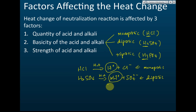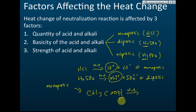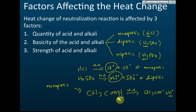If an acid forms two hydrogen ions it is diprotic, and one hydrogen ion means monoprotic. Now, consider CH₃COOH (ethanoic acid) — is it monoprotic, diprotic, or triprotic? This is actually monoprotic. When it dissolves in water, only one hydrogen will form a hydrogen ion. The other three hydrogens remain in the molecule, giving CH₃COO⁻ plus one hydrogen ion. So we do not judge by how many hydrogens are in the molecule, but by how many hydrogen ions form when the acid dissolves in water.